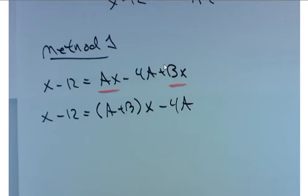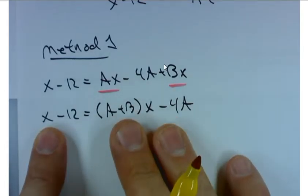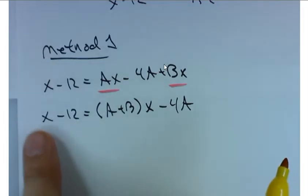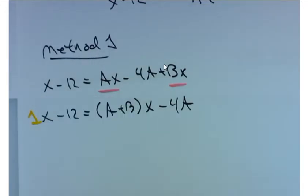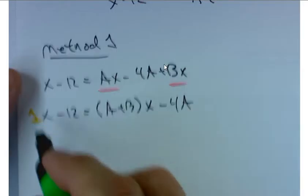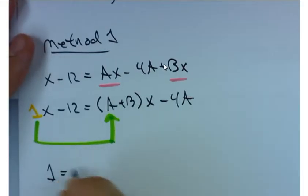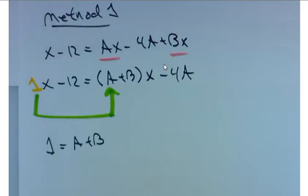What we're going to do is set up a system of equations. Notice that the left hand side equals the right hand side. And in particular, on the left hand side, what's the coefficient of x? 1. It's not written, but it's understood to be a 1. What's the coefficient of x on the right hand side? A plus B. So that gives me an equation: 1 equals A plus B.